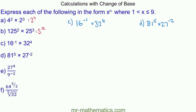For question c, we can write 16 and 32 using the base of 2. The 16 is 2 to the power of 4, which we raise to the power of negative 1. Using the power rule, this becomes 2 to the power of 4 times negative 1, giving 2 to the power of negative 4.